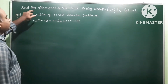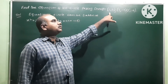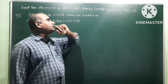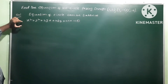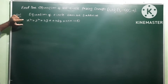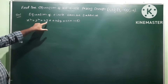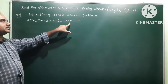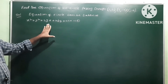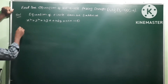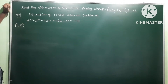Next problem: find the equation of the circle passing through (1,2), (3,-4), and (5,-6). Three points pass through the circle. The general form of the circle is x² + y² + 2gx + 2fy + c = 0. Let us say this is equation number 1 — the required circle. We substitute each of the three points.